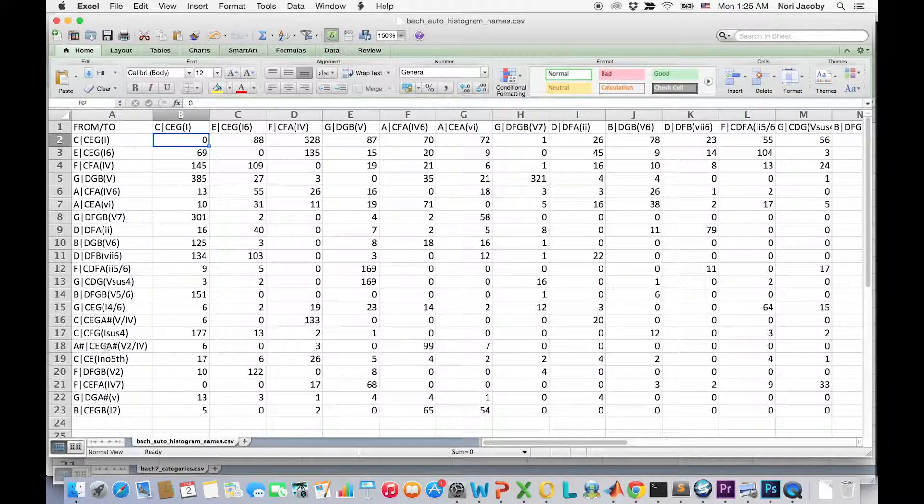The resulting sonorities are mostly, but not always, tertian chords. Note that I added manually the Roman numeral labels. Again, we run the applet by using the joint probability of most common consecutive sonorities extracted from the MIDI.